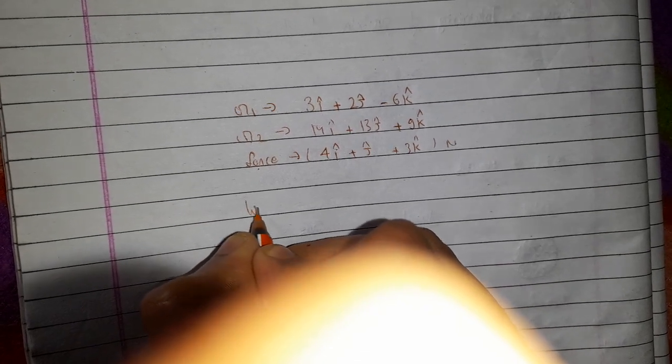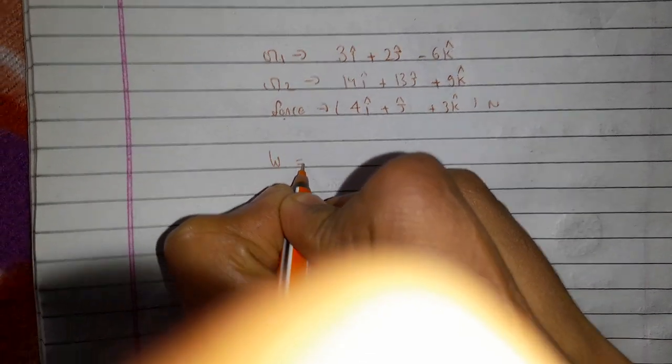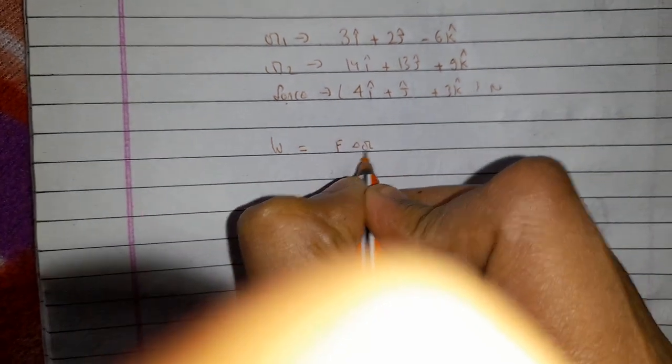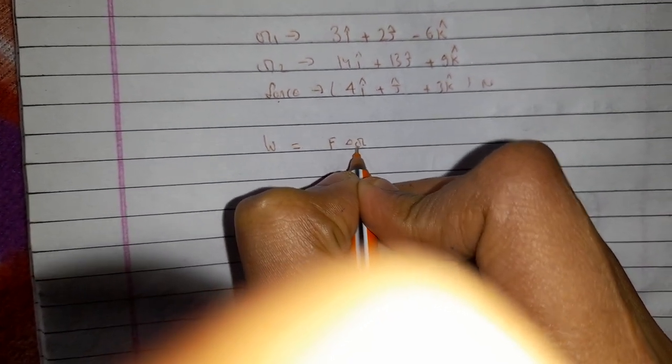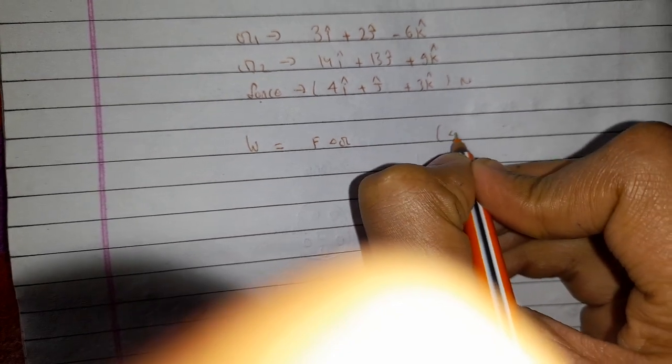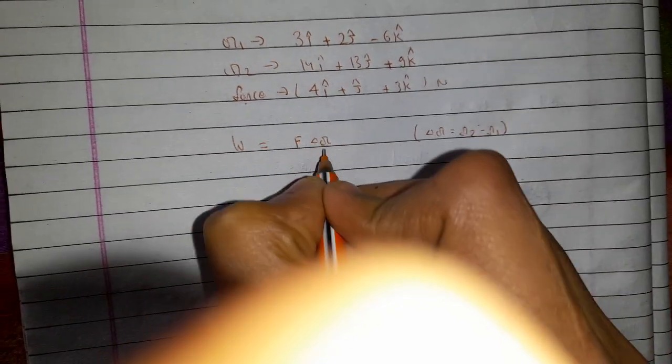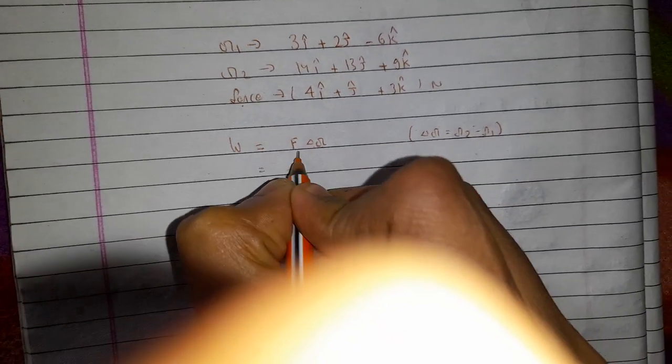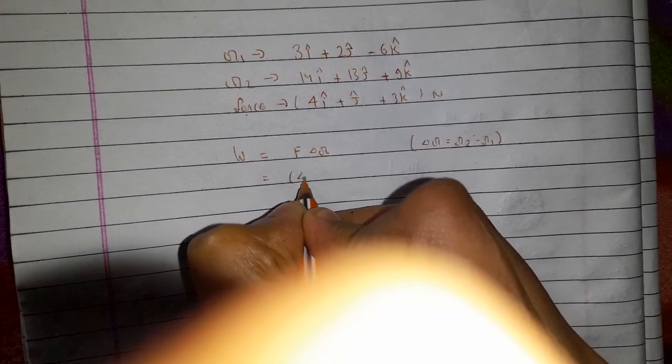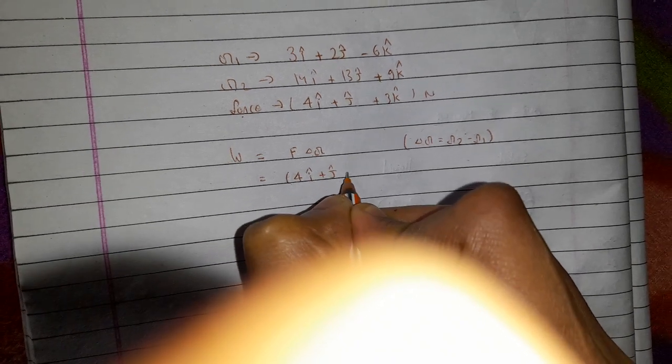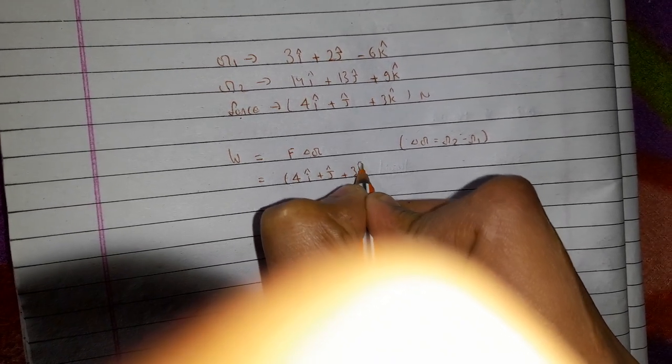We know that work done equals F dot delta r. What's delta r here? Delta r is r2 minus r1. So F, we will write down the value of F: that's 4i cap plus j cap plus 3k cap.